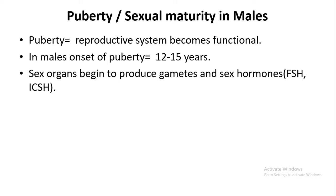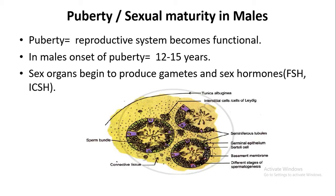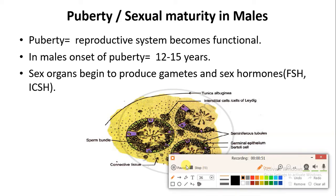That process is called spermatogenesis. The sex hormones such as FSH and ICSH play a very important role. FSH, the follicle stimulating hormone, stimulates the germinal epithelium cells. When germ cells are produced, sperm formation occurs by the help of meiosis type of cell division, and then the sperms get produced.